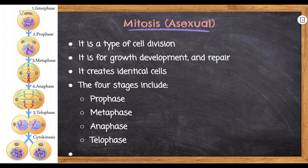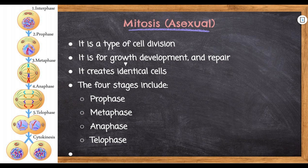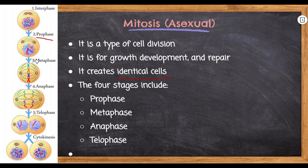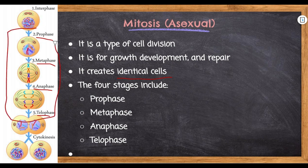Mitosis is a type of cell division — the cell goes from one to two cells. It is for growth, development, and repair. If you cut yourself or break your arm, mitosis grows a scab by dividing cells or helps repair bone tissue. It creates identical cells, so if you're healing a broken bone you get more bone tissue. The four stages of mitosis to remember are: prophase, metaphase, anaphase, and telophase — especially remember these for the final exam.